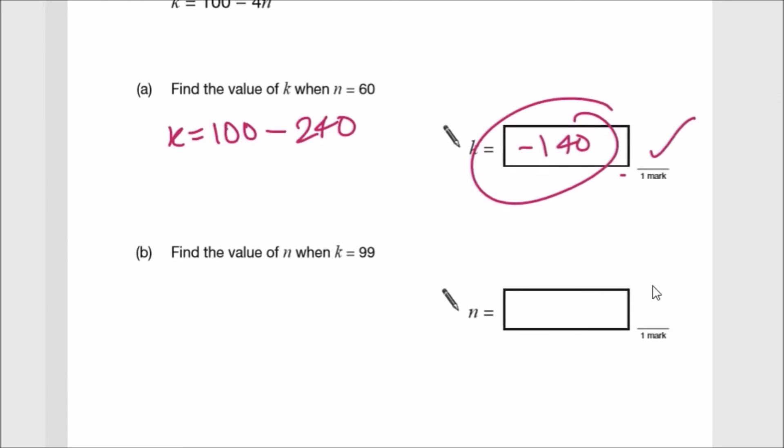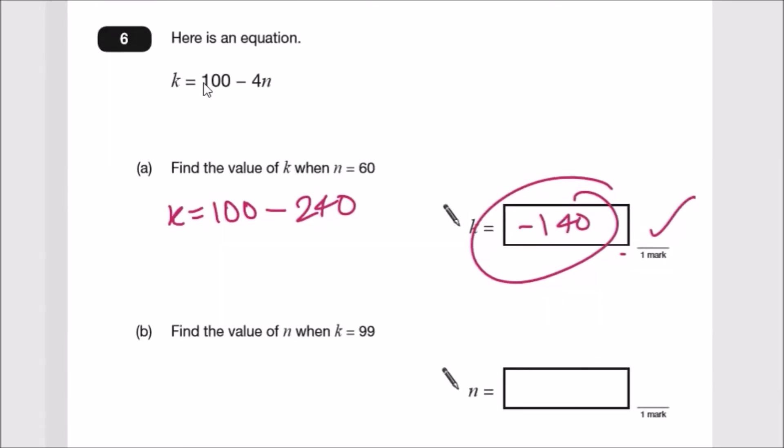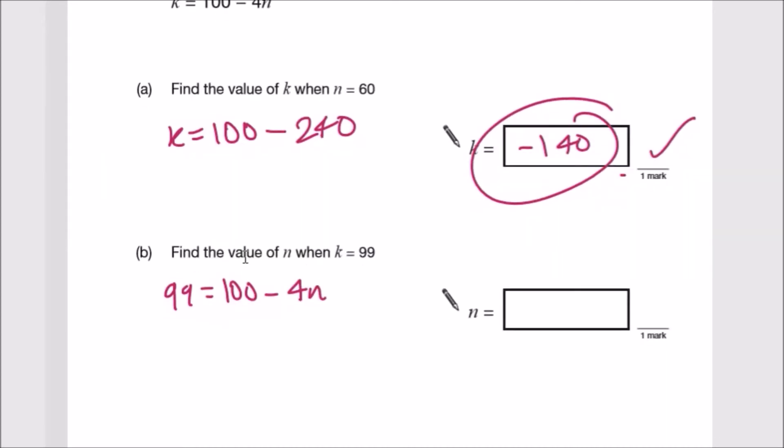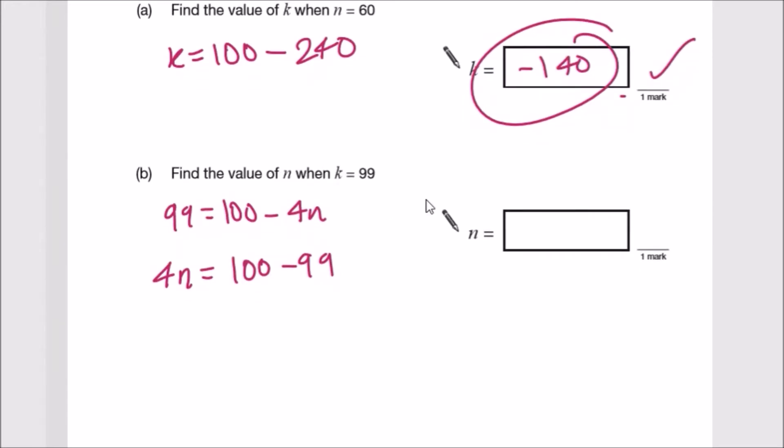Part B: Find the value of n when k is 99. Rewrite as 99 equals 100 minus 4n. Rearranging, throwing -4n across gives positive 4n, and throwing 99 across gives 100 minus 99. Solving: 100 minus 99 is 1, and dividing by 4 gives n equals a quarter.